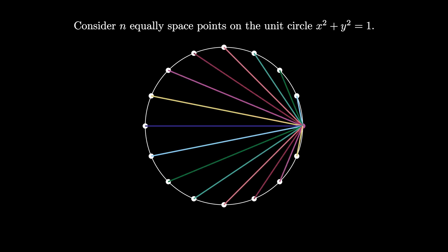Consider n equally spaced points on the unit circle which has the equation x² + y² = 1. Take one point in particular and connect it to every other point on the circle with a bunch of chords. What is the product of all the chord lengths that we have in this picture?